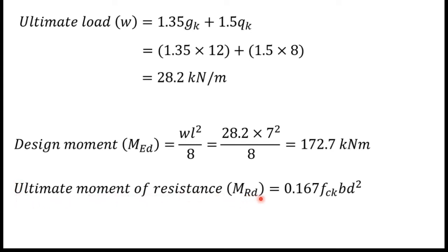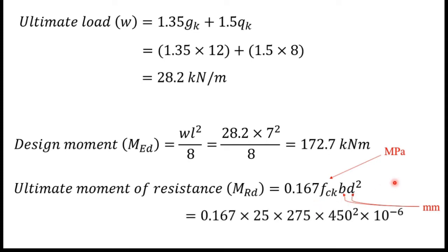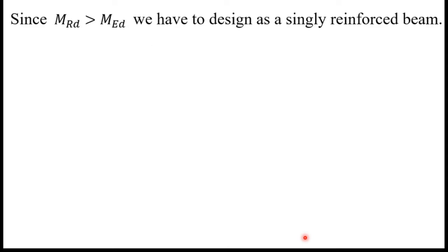Next we find the ultimate moment of resistance MRD using MRD = 0.167·FCK·B·D², where FCK is in megapascals and B and D are in millimeters. Substituting the given values with the unit conversion factor of 10⁻⁶, we get MRD = 232.5 kilonewton meters. Since MRD is greater than MED, we design this beam as a singly reinforced beam.